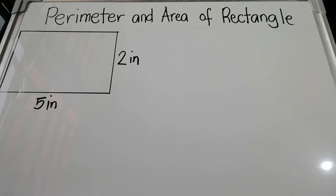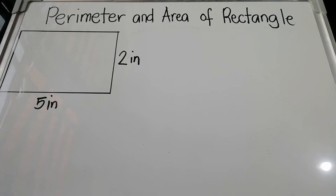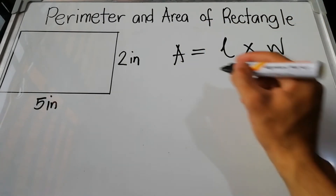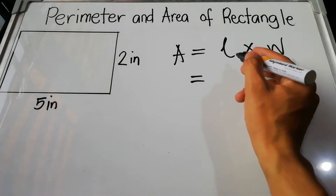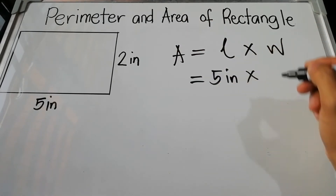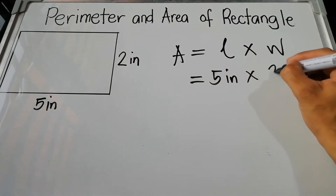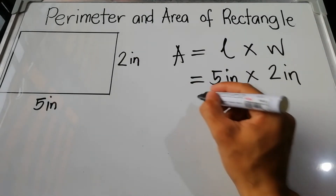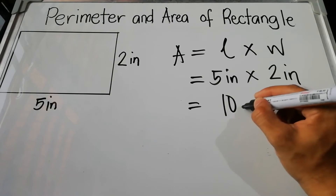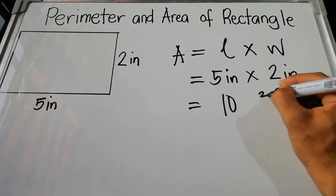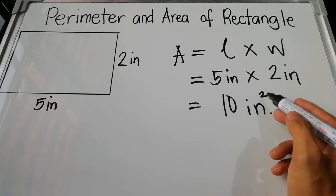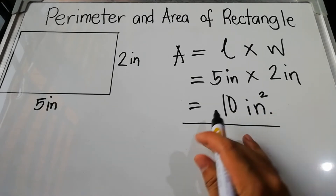For the area of the rectangle, just multiply the length and width. Area equals length times width. Substituting the values: 5 inches times 2 inches. Therefore 5 times 2 equals 10. We write square first, so the final answer is 10 square inches.